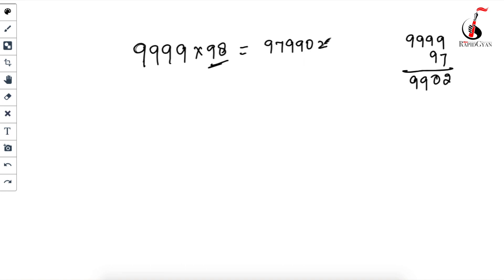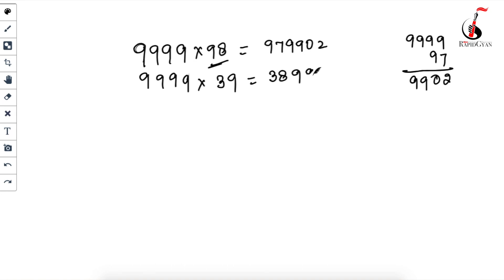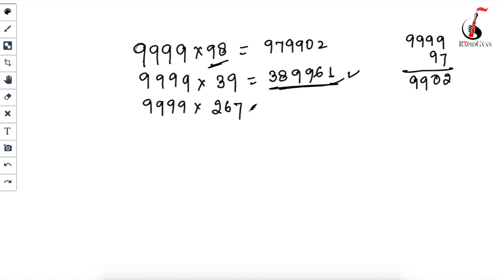For 9999 × 39: one less than 39 is 38. Subtract from 9999: 9, 9, 9 − 3 = 6, 9 − 8 = 1. Answer: 389961. For 9999 × 267: one less is 266. Then 9 − 0 = 9, 9 − 2 = 7, 9 − 6 = 3, 9 − 6 = 3. Answer: 2669733. Check it!